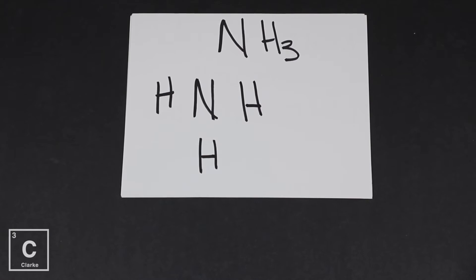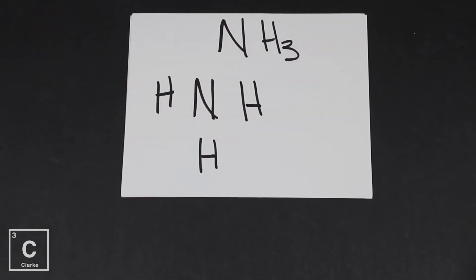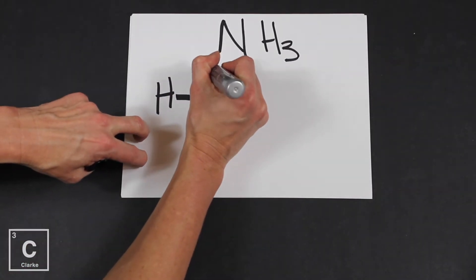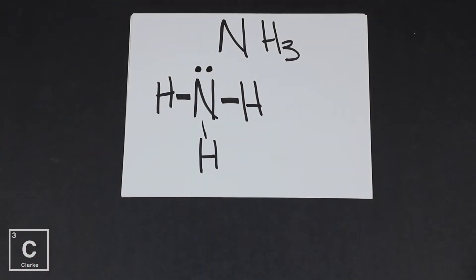Now we need to count the valence electrons. Nitrogen has five. Hydrogens each have one. Five, six, seven, eight. We have eight valence electrons to work with. Now we need to bond everything up. We've got three bonds, they each have two electrons, so we've used two, four, six valence electrons. Remember we had eight, so we've got seven, eight. Okay, so here's our Lewis dot structure, but we've learned that this is not really the shape.